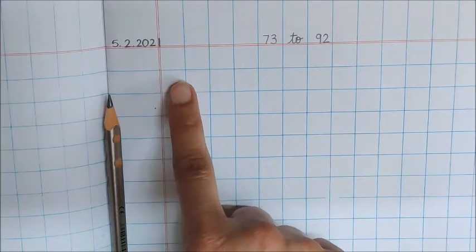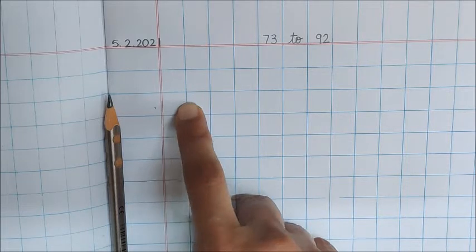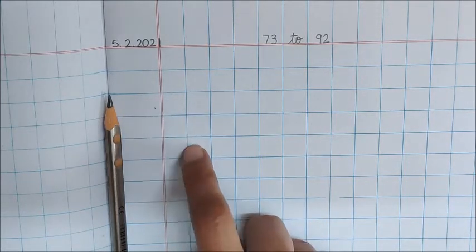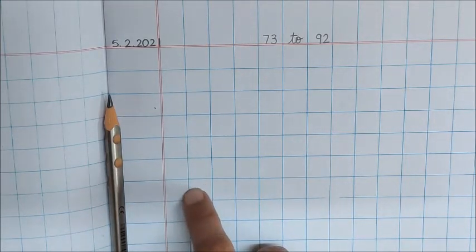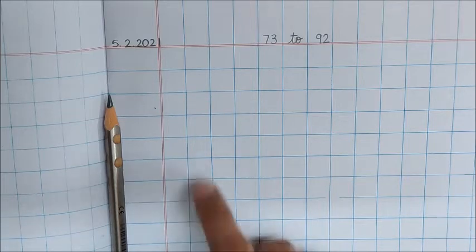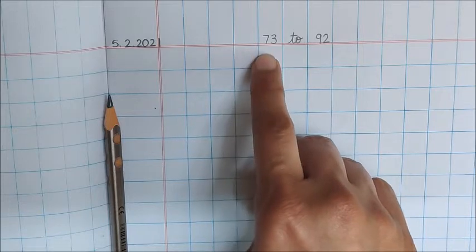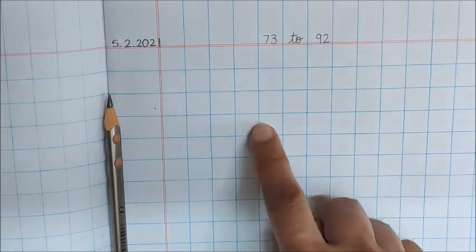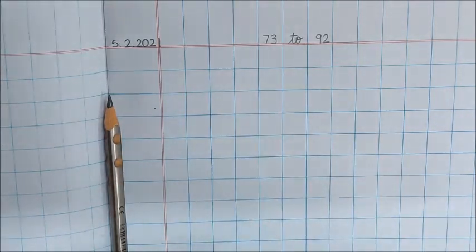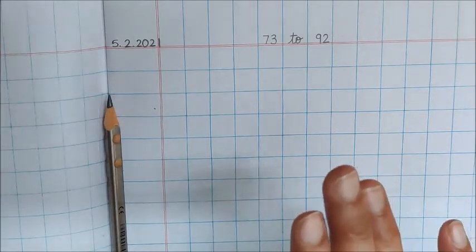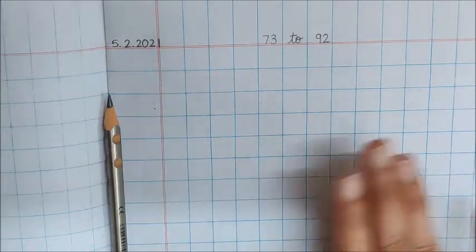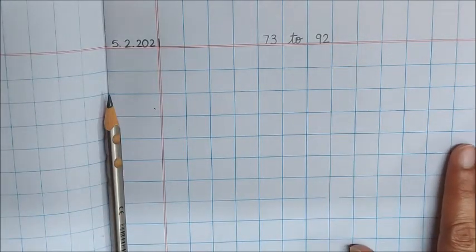Write the numbers 73, 74, 75, 76, 77, 78, 79. Then leave one box, put a dot. Then again write down TO and continue writing 80, 81, 82, 83, 84, 85, 86, 87, 88, 89 till 92. You have to do writing of numbers.